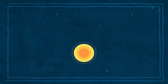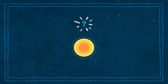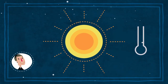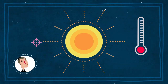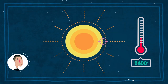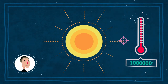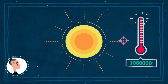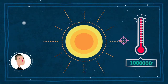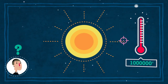Aber warum sind sie überhaupt wichtig? Die Sonne ist voller ungelöster Rätsel. Wusstest du beispielsweise, dass die äußeren Schichten der Sonne viel heißer sind als die Sonnenoberfläche? Die Temperatur in der Corona der Sonne misst mehr als eine Million Grad, an der Sonnenoberfläche nur 6000 Grad. Warum, wissen wir nicht.